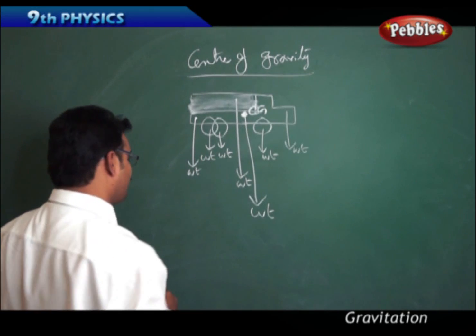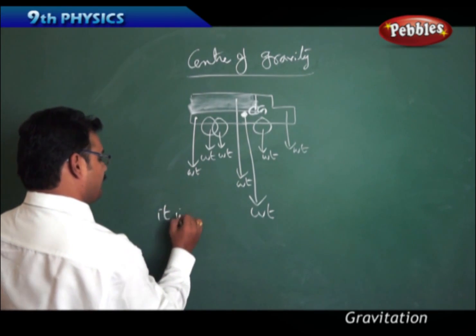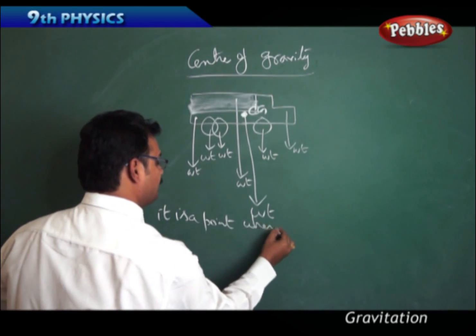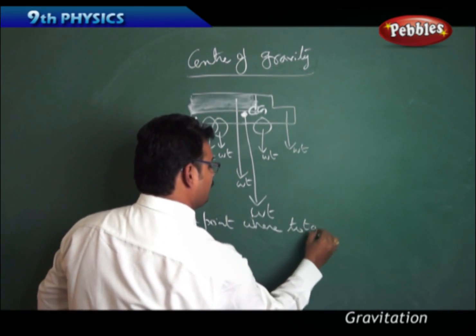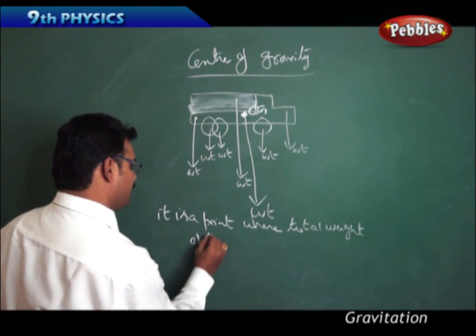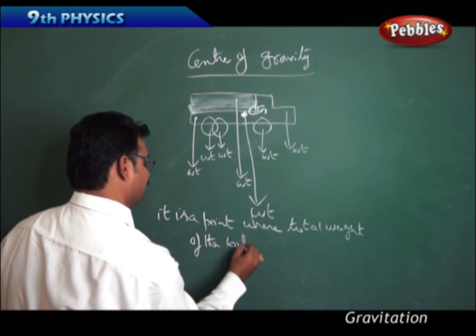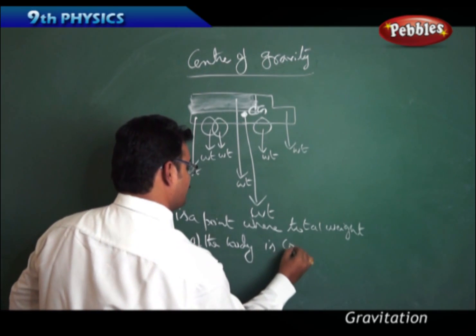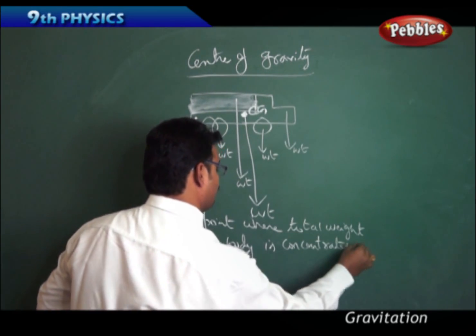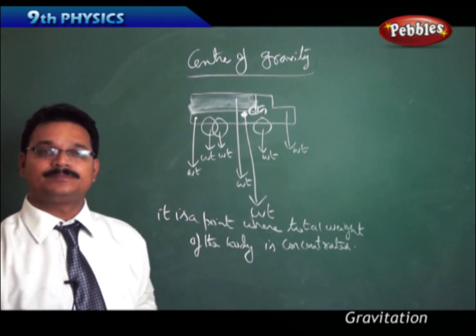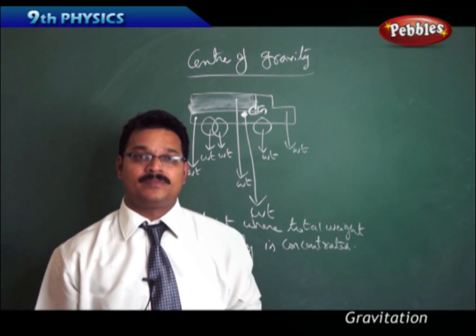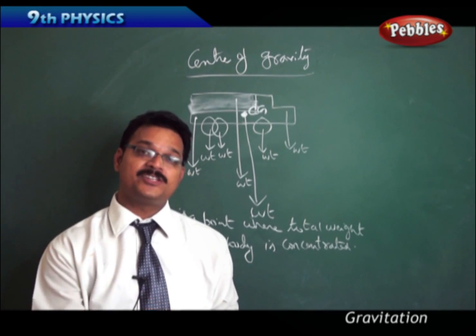So for each and every body there is a point where the total weight acts, just as from the truck that point is called the center of gravity. The definition of center of gravity: it is a point where the total weight of the body is concentrated. The location of the center of gravity is different for different shaped bodies.